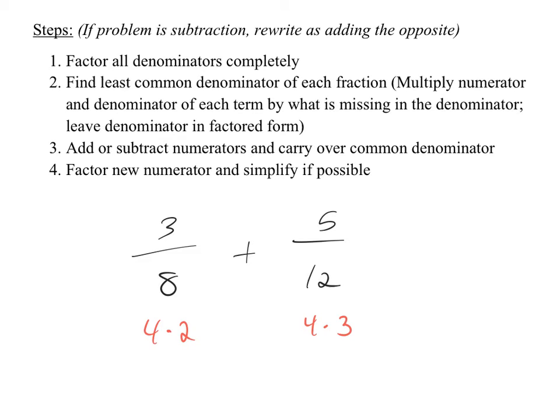We have 4 times 2, we have 4 times 3. Which factor is common in both? What's missing over here and what's over here? 3. What's missing over here? So technically, just multiply this by 2. What would you get? 24. Multiply this by 3, what do you get? 24.